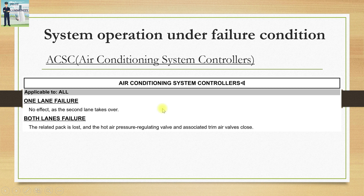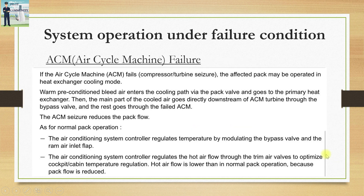The ACSC system is simpler than the zone and pack controllers. It has only two lanes; if one lane fails, the other takes over and the system works normally. If both lanes fail, the related pack is lost and the hot air pressure regulating valve and associated trim air valves will close.